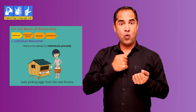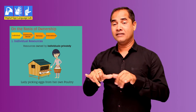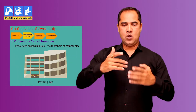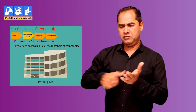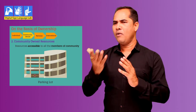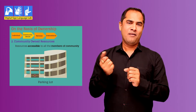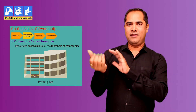Next, on the basis of ownership, we have individual resources which are owned by oneself — for example, a home or land. These are privately owned resources. Community-owned resources include farms, temples, water tanks, and fish tanks, which are owned by a group of people.